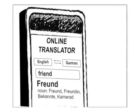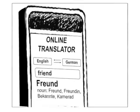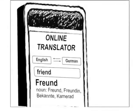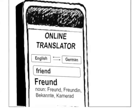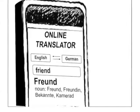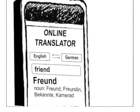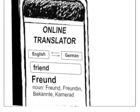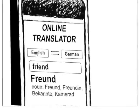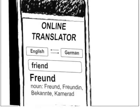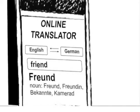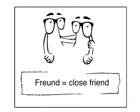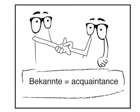When language learners look up a word or a phrase, they need more guidance than a simple English translation, which can be misleading without adequate support such as details about grammar and usage. For instance, the English word for 'friend' has two literal translations in German: Freund and Bekannte. But they can't be used interchangeably. Freund means close friend, and Bekannte means a friend who is really just an acquaintance.